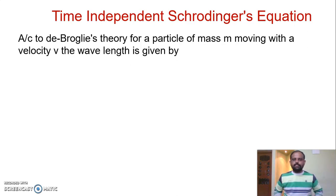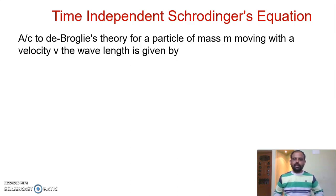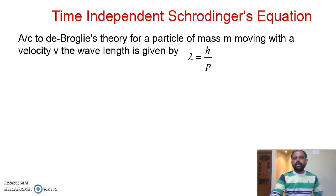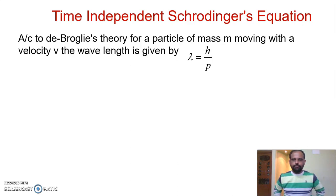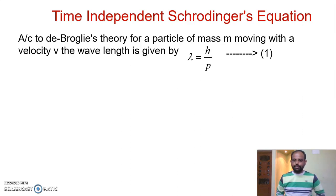We can apply the same concept in this case: for a particle in any state or in any system, the wavelength associated with that particle according to de Broglie's theory is lambda equal to h divided by p. We can call this equation number one.